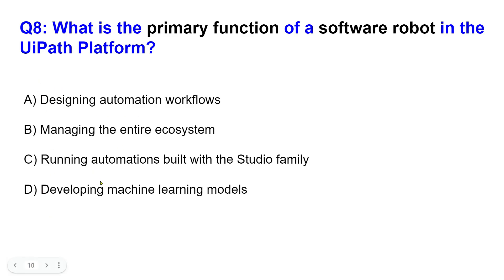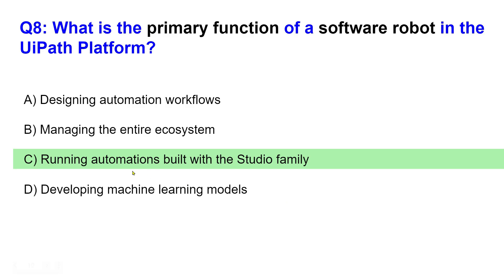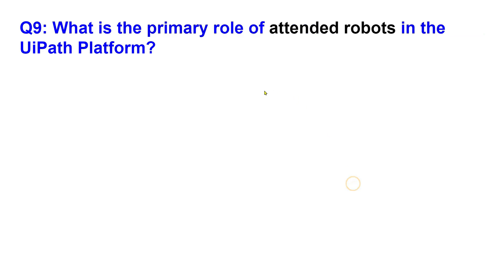The right answer is C — running automations built with the Studio family. The robot is used to run or execute automations which are built using the UiPath Studio family. Let's move on to the next question.